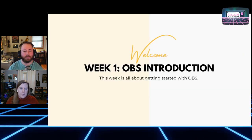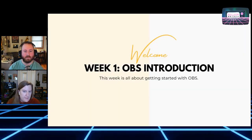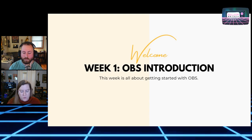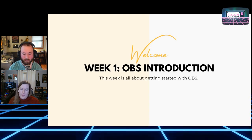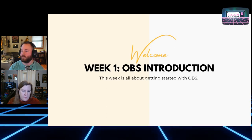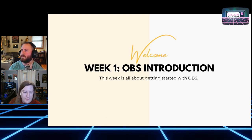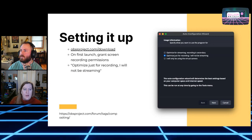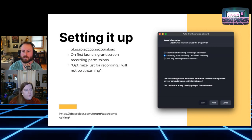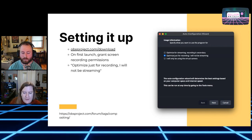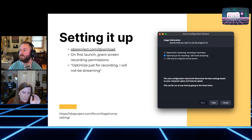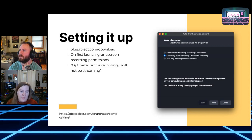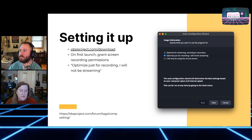We're going to start out with a downloaded copy of OBS, with all the system preferences to give the correct permissions — screen recording, your video camera or any camera inputs, and microphone permissions — to make sure the computer can recognize all that. Today we'll be going through getting started, setting up the auto configuration wizard, and then additional inputs as well, picking up from that auto config wizard page and then adding our own inputs.